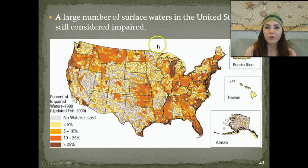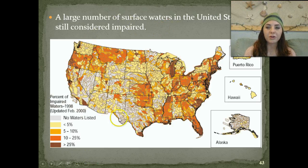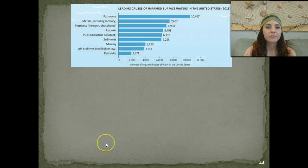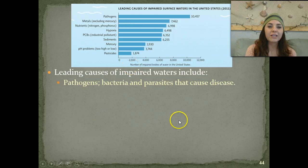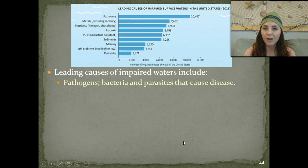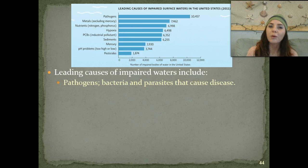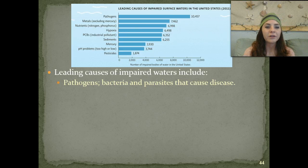This is a large number of surface waters in the United States that are still considered to be impaired. This chart shows the leading causes of impaired waters—basically what made that water impaired so we can't swim in it or eat fish out of it.